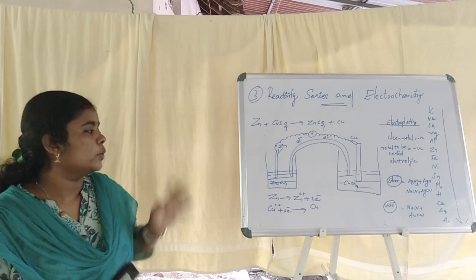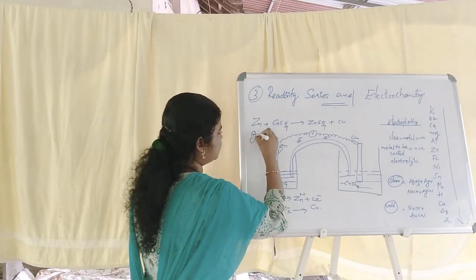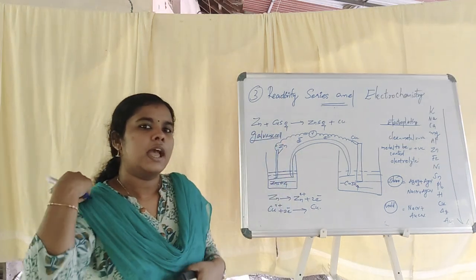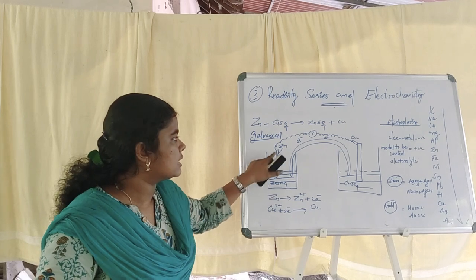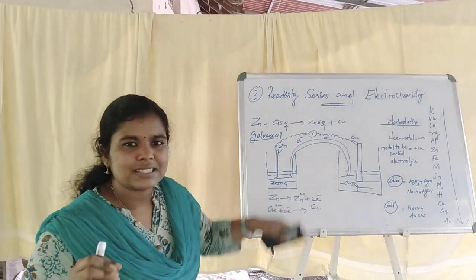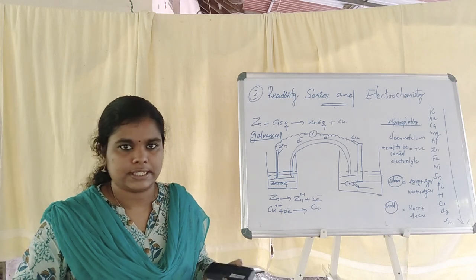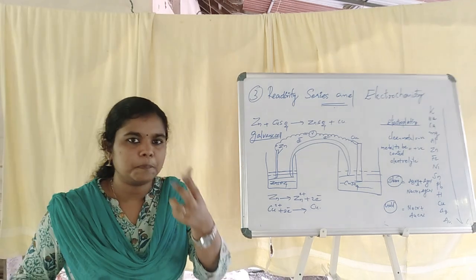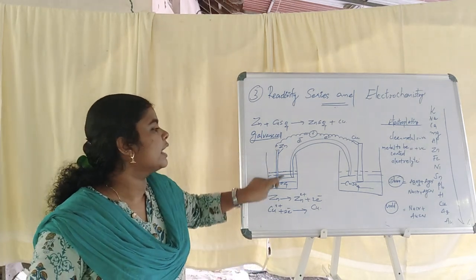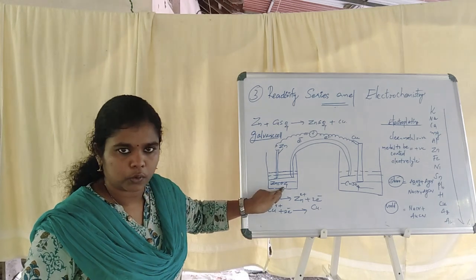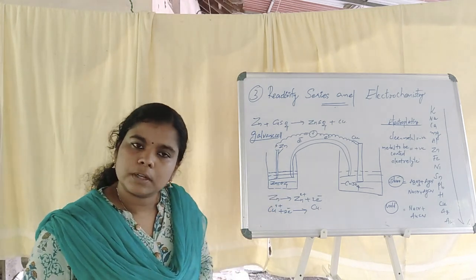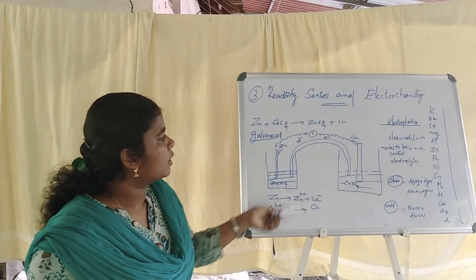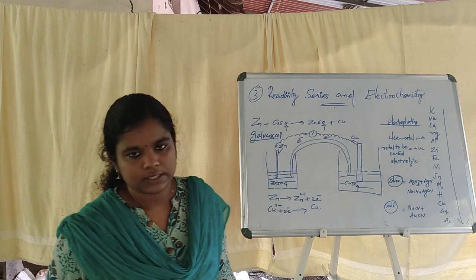This is a cell — a Galvanic Cell. The Galvanic Cell is set up using electrodes. An electrode means a single metal piece which conducts electricity. A single electrode is placed in a solution, such as copper in copper sulfate solution — that is one of the electrodes.